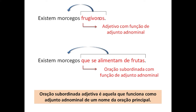Já quando eu transformo isso em uma oração: 'existem morcegos que se alimentam de frutas.' Olha: 'alimentam' é verbo. Dessa forma eu possuo dois verbos — 'existem' e 'alimentam' — período composto. Há um 'que' que é a ligação, só que agora eu não tenho conjunção integrante. Esse 'que' seria um pronome relativo. Porque quando eu desmembro: 'existem morcegos que se alimentam de frutas' — quem se alimenta de frutas? Esse 'que' retoma morcegos. Para não ficar repetitivo, eu utilizo um pronome relativo.